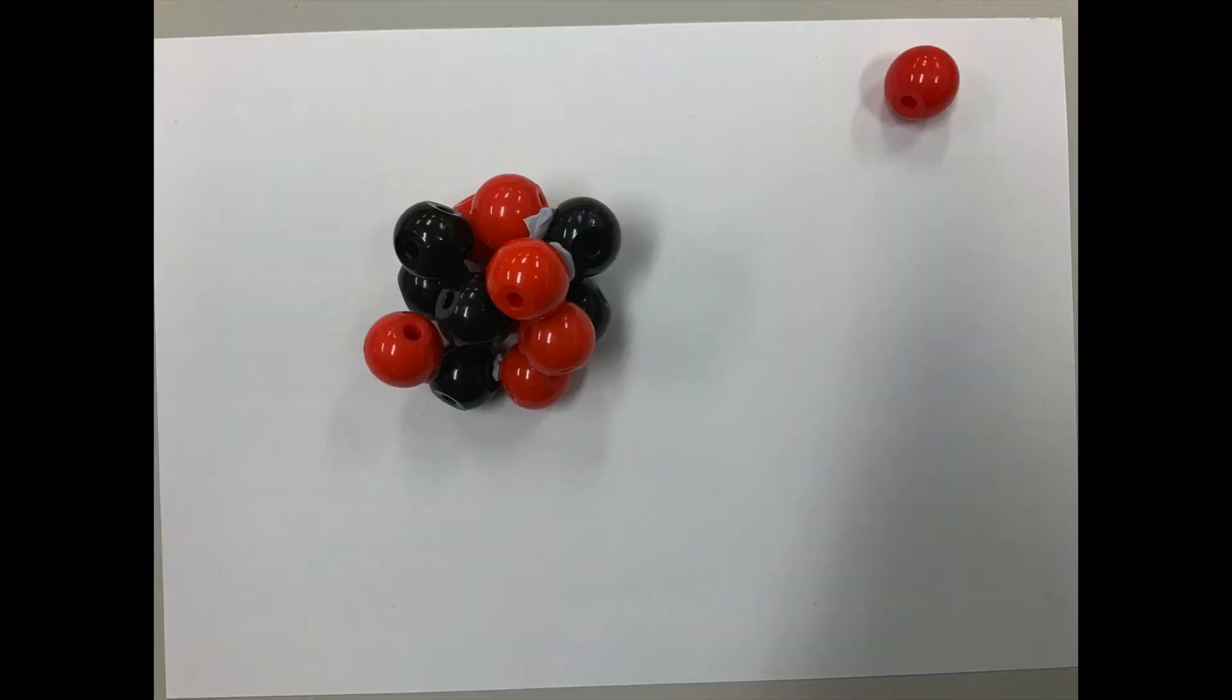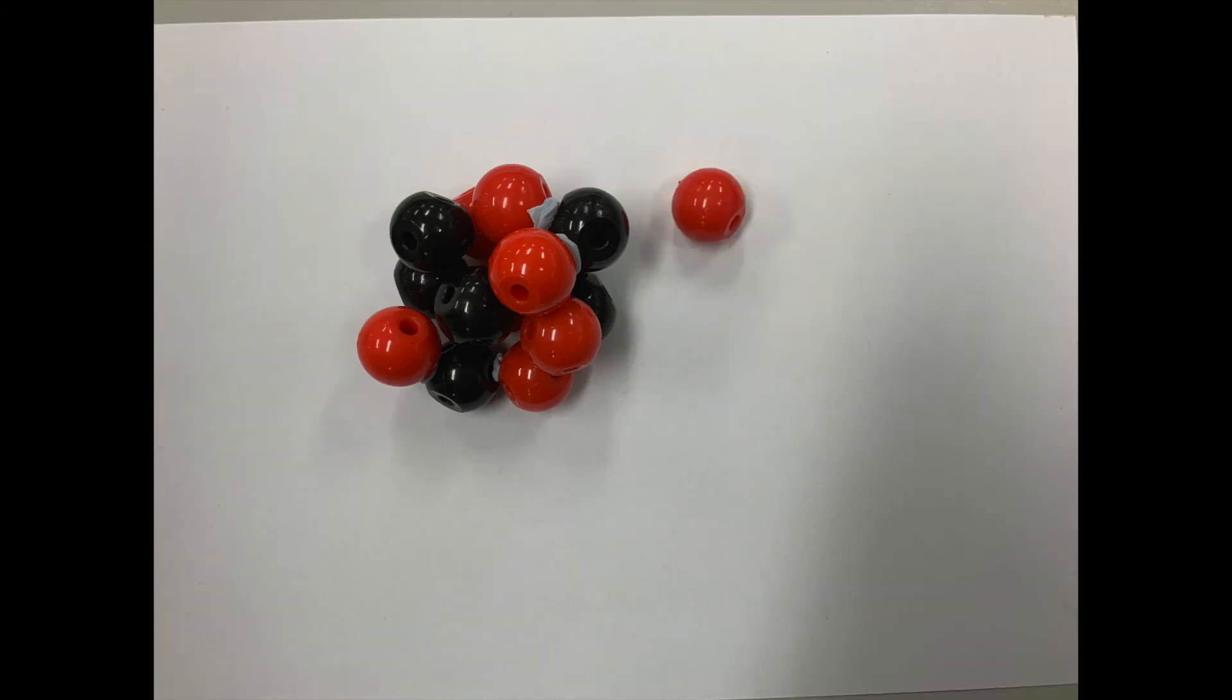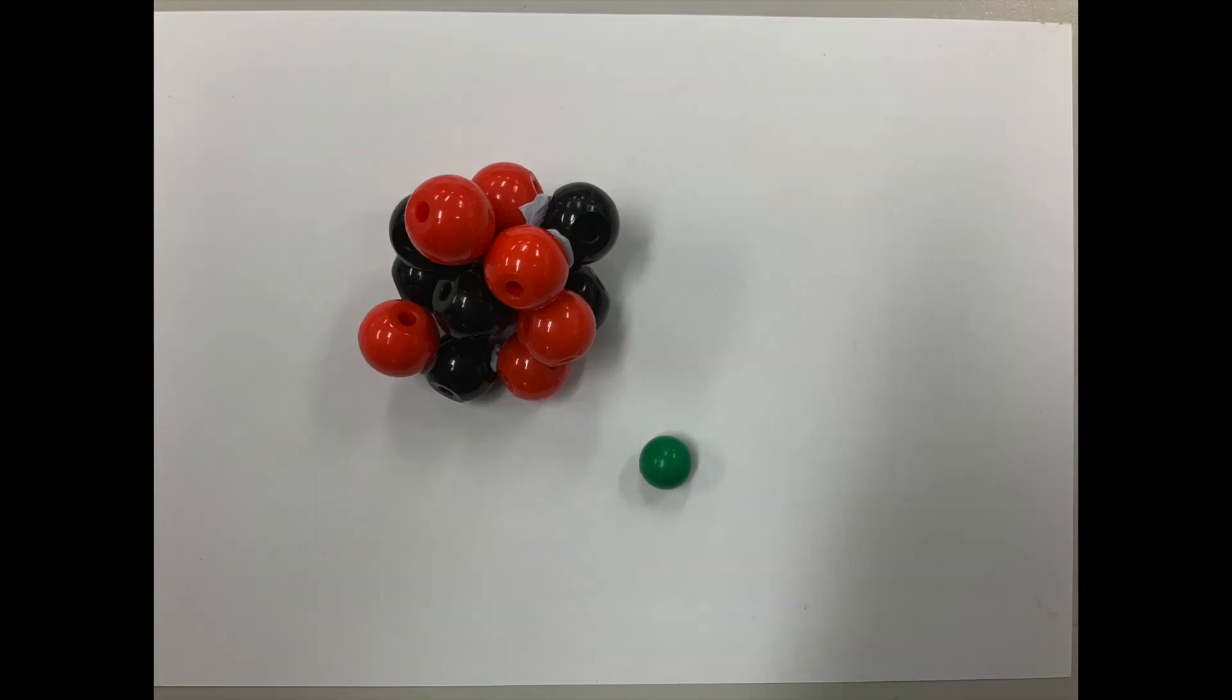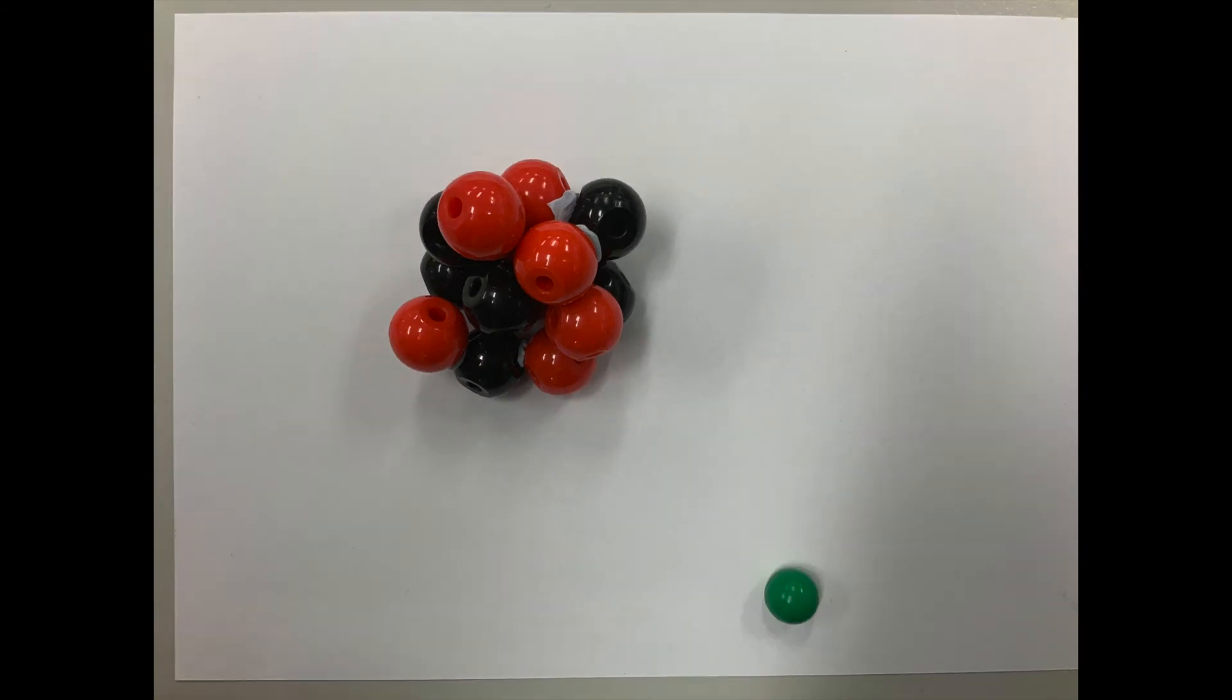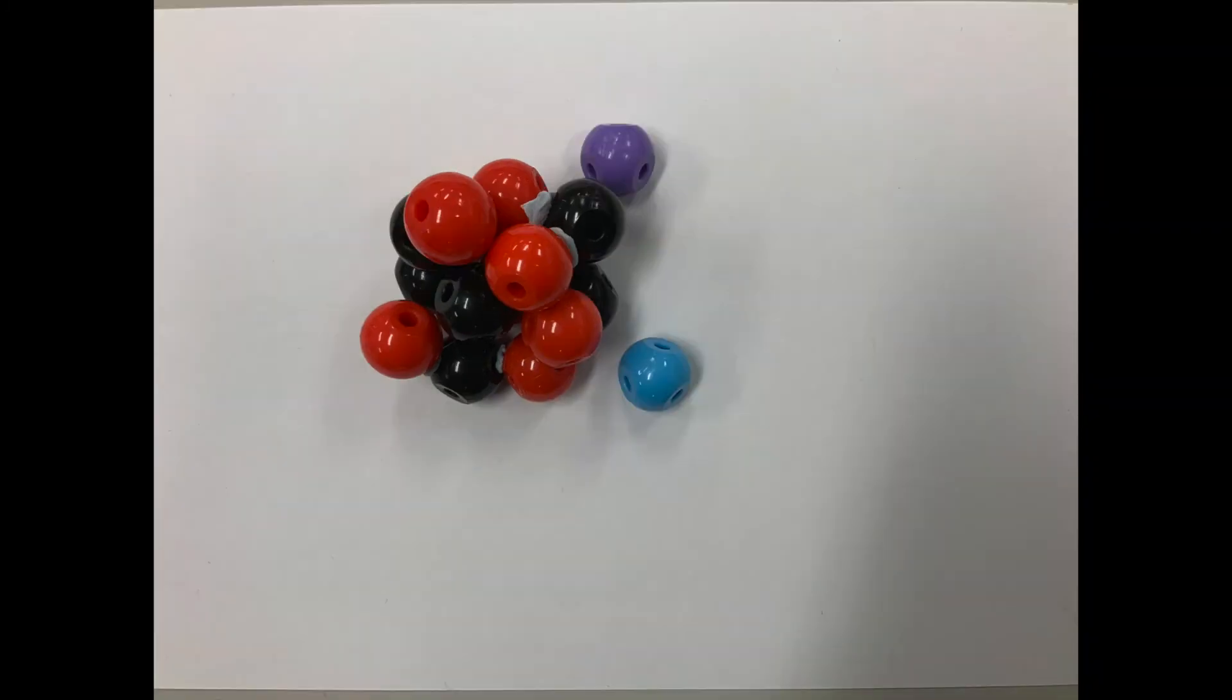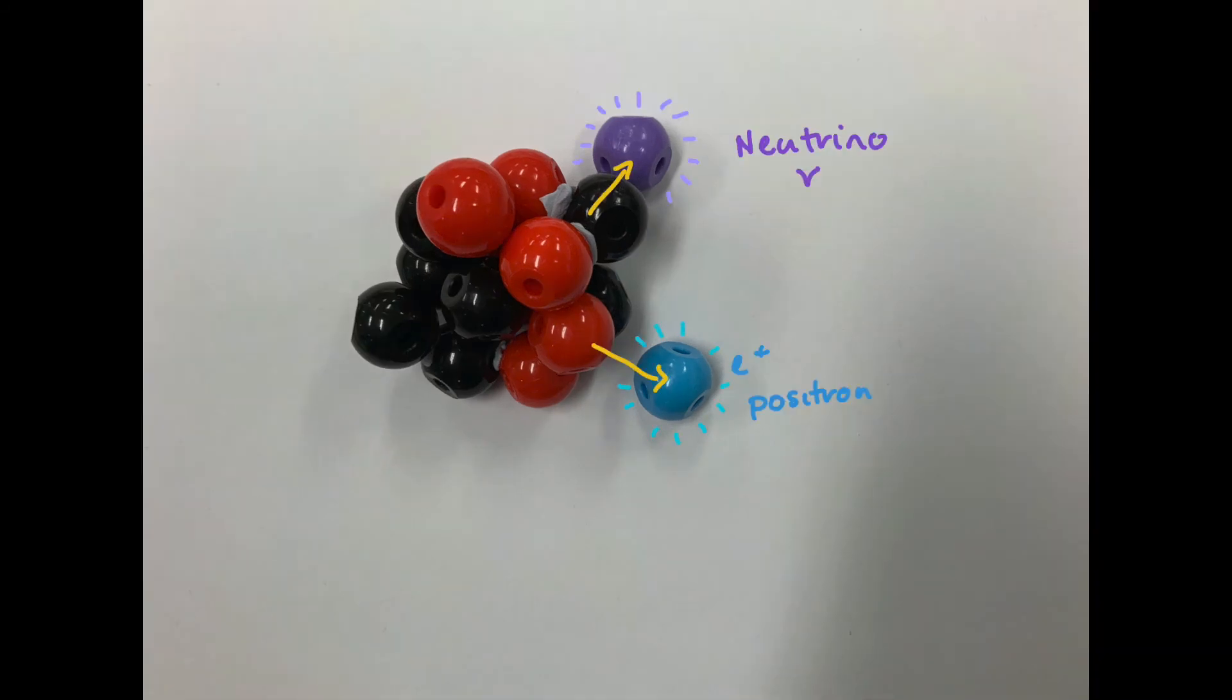This nitrogen nucleus then collides with another proton, emitting another gamma ray and forming a light oxygen nucleus. The oxygen then decays, releasing another positron and neutrino to become heavy nitrogen.